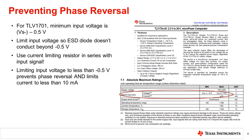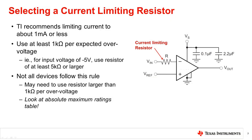Depending on how large the negative input voltage is, one way to limit the input current to a safe level is by using a current limiting resistor in series with the input signal. For the TOV1701, footnote 2 of the absolute maximum ratings table states that the input signal can swing beyond negative 0.5 volts as long as the current is limited to less than 10 milliamps. Limiting the current to less than 10 milliamps will protect the device and prevent damage, but not prevent phase reversal. However, by limiting the input voltage to less than negative 0.5 volts, this will always prevent phase reversal as well as limit the current to less than 10 milliamps. Typically, the current should be limited to 1 milliamp or less at the highest expected overvoltage, so the resistor must be at least 1 kilo-ohm per volt. For example, if the maximum expected negative voltage is negative 5 volts, then the resistor should be at least 5 kilo-ohms or larger.